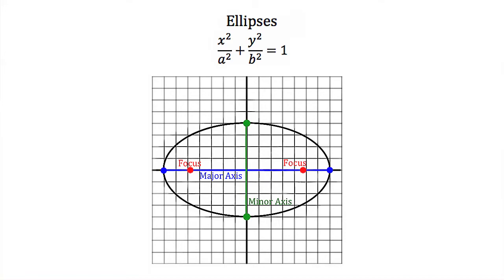Let's compare the shape of the graph to the standard form equation. The a, or a-squared, is underneath the x-squared term, meaning a is the distance from the center of the ellipse to the vertices in the x-direction. So both distances from center to the x-vertices equal a. The b-squared term is underneath the y-squared term, so the b-distance is the distance from the center to the vertices in the y-direction — both distances from center to y-vertices equal b.